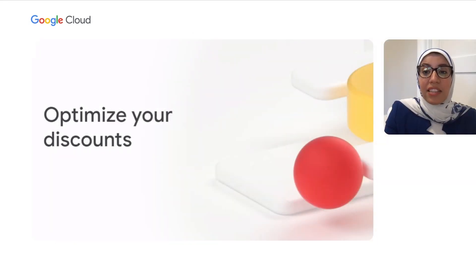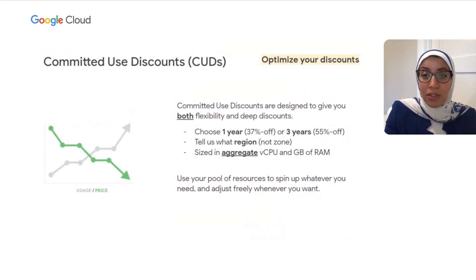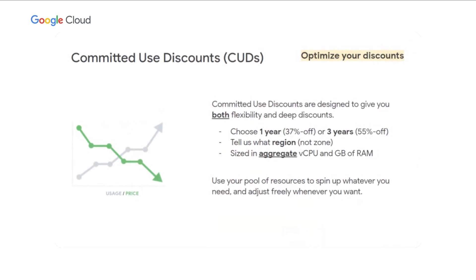Now we'll talk about the last lever of cost optimization: discounting. Committed use discounts, or CUDs, provide deeply discounted pricing in exchange for a usage commitment. They are ideal for steady-state usage and provide some of the deepest discounts on Compute Engine, up to 55% off. CUDs offer simplicity and flexibility — they can be applied to different machine sizes or across operating systems, and they also apply to other GCP services like Google Kubernetes Engine and Dataproc. Committed use discounts are flexible: you can bring VMs up and down and change their shapes, and the commitment still applies automatically. Any resource that does not qualify for CUDs automatically qualifies for sustained use discounts, though you cannot combine both for the same resource at the same time.